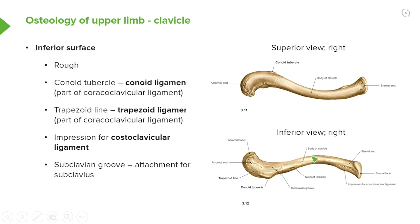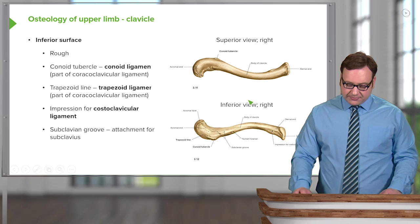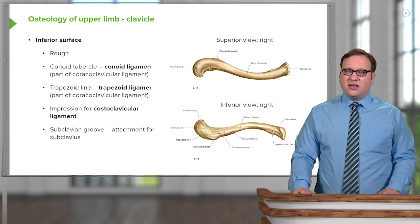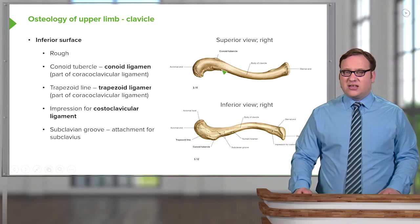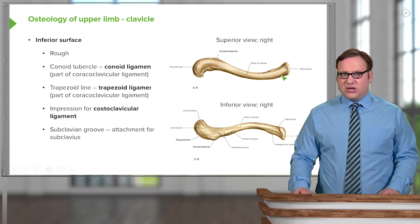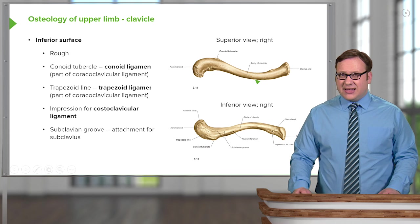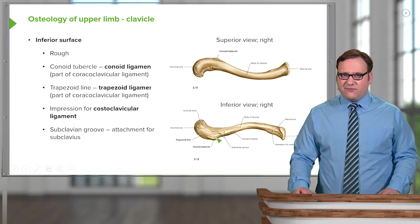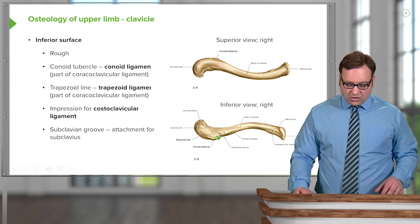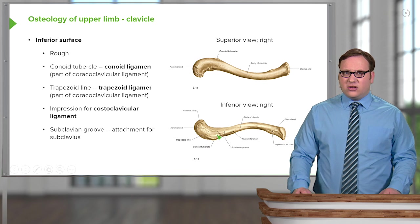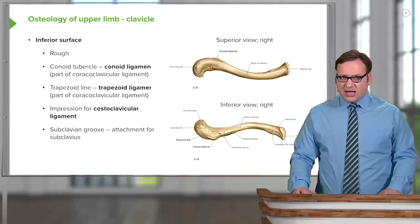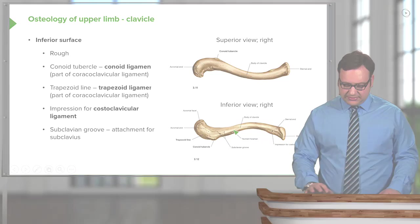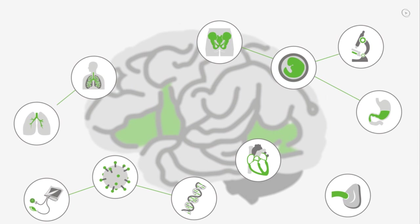Another feature on the inferior view of the clavicle is the nutrient foramen, where the nutrient artery passes into the clavicle to provide its blood supply. To summarise, this diagram shows a right clavicle: the smooth superior surface is convex anteriorly for the medial half and concave anteriorly for the lateral half. The inferior view is roughened and features the conoid tubercle, the trapezoid line, the costoclavicular ligament impression, and a groove for subclavius.